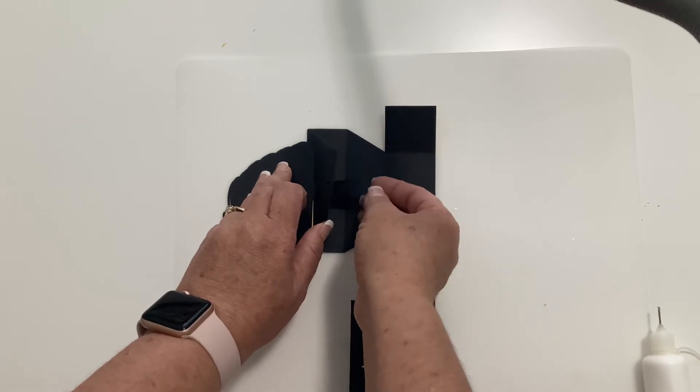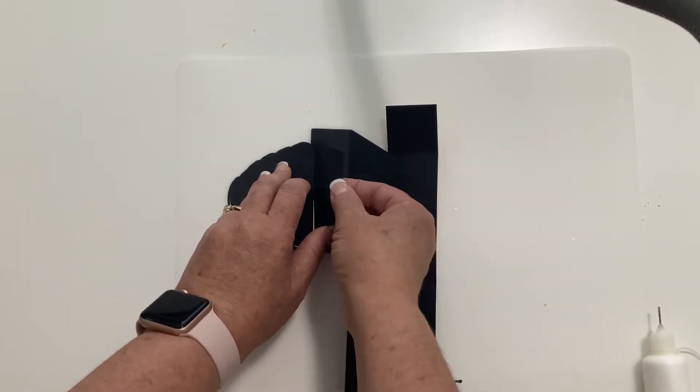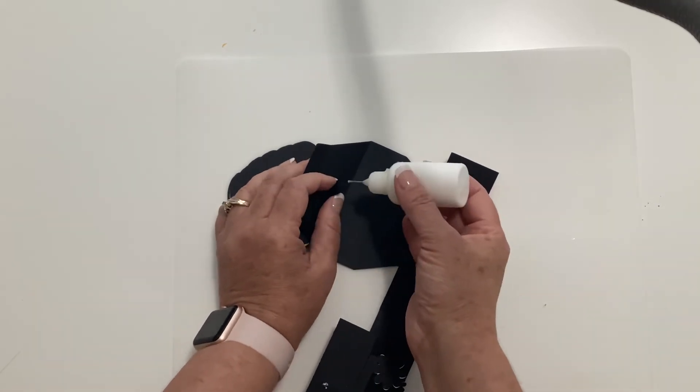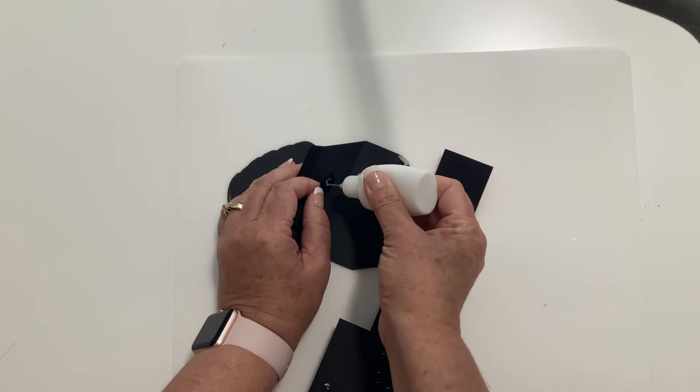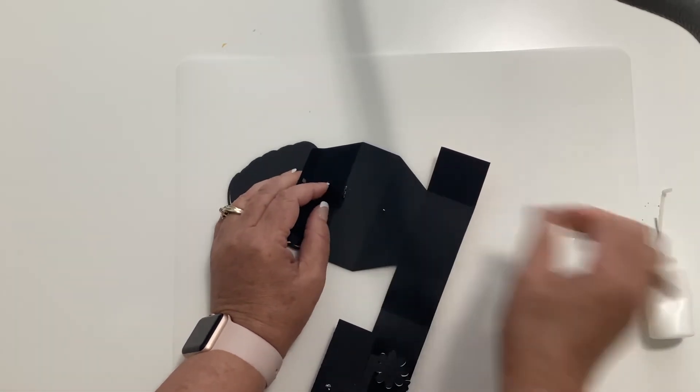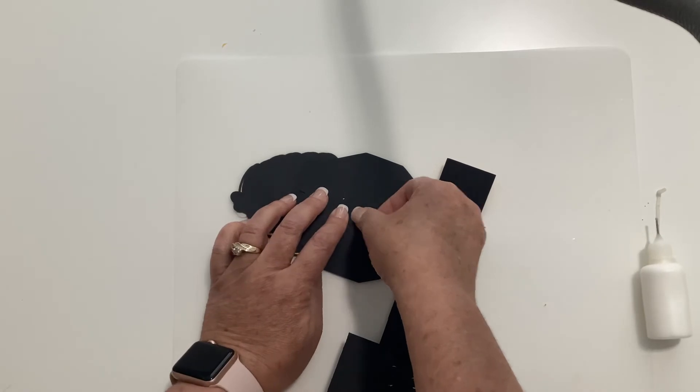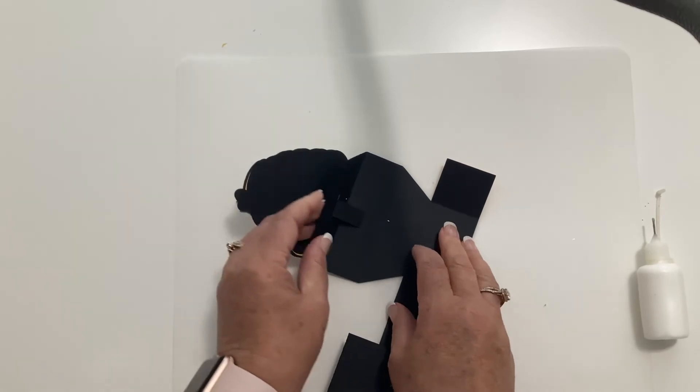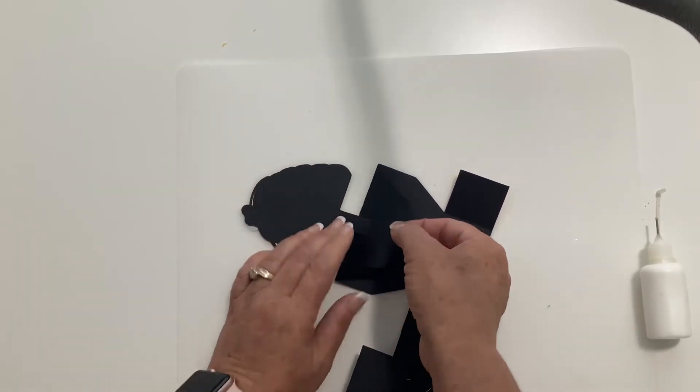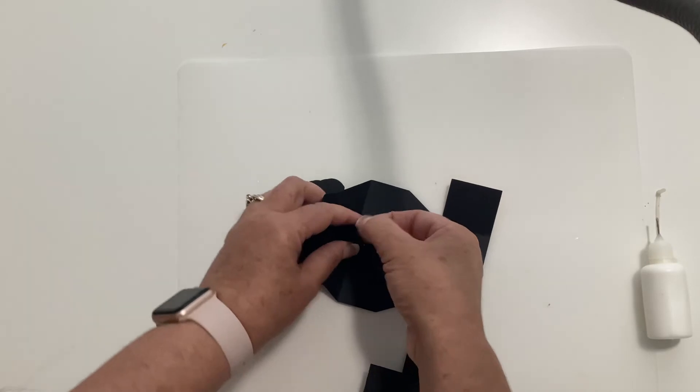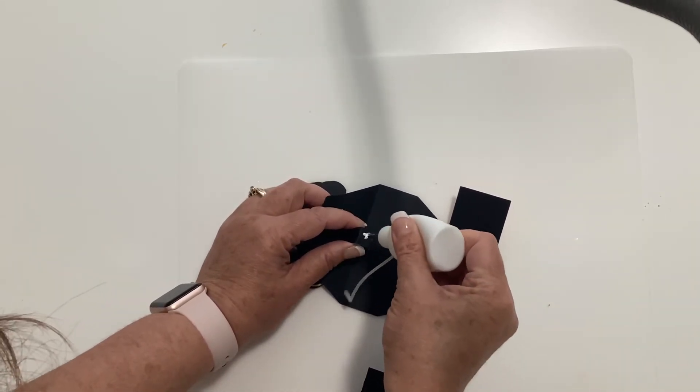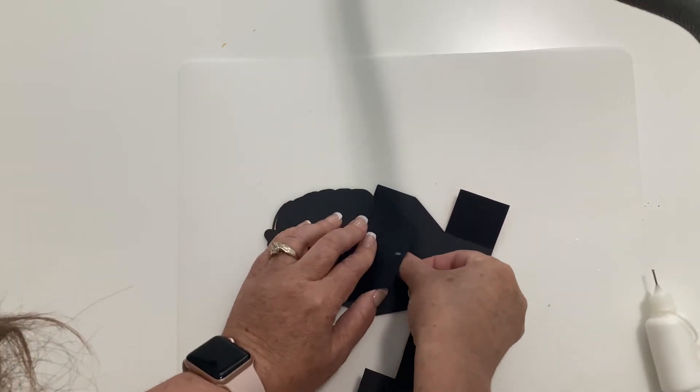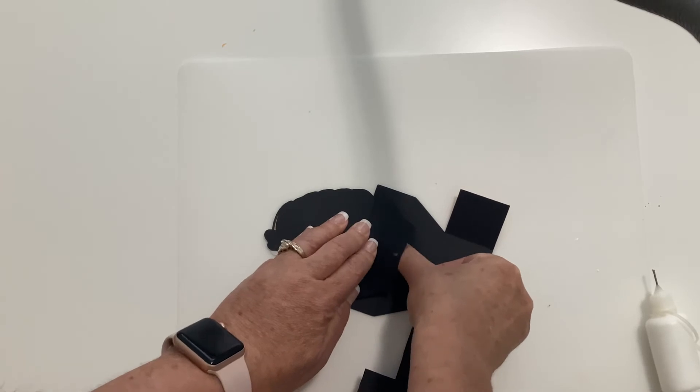Then you're going to take this tab and you're going to fold it on the score line and then glue it. Okay, now we're going to take this. Whoops, my glue came off. I didn't put much glue on there. Let's try it one more time. So you're going to fold it over the second line and that tab is actually underneath there.